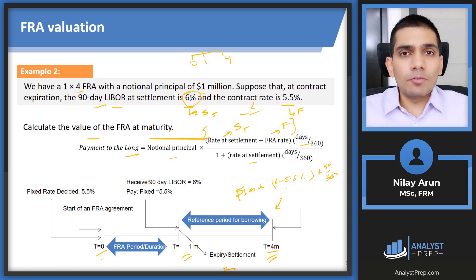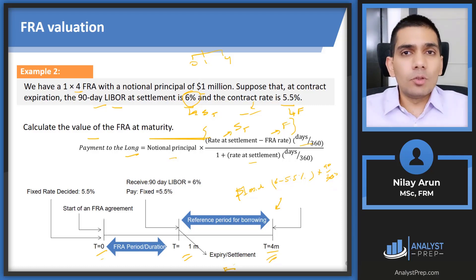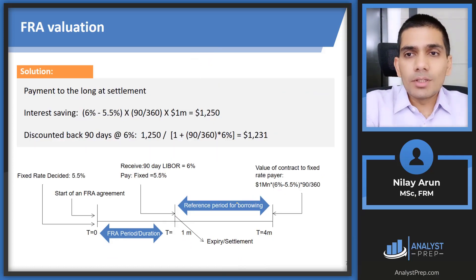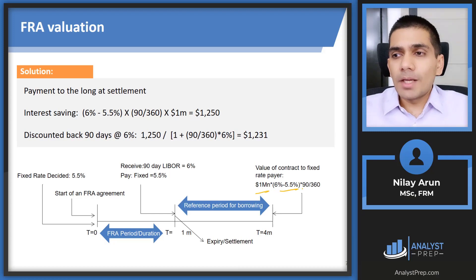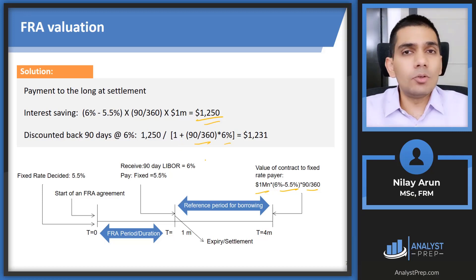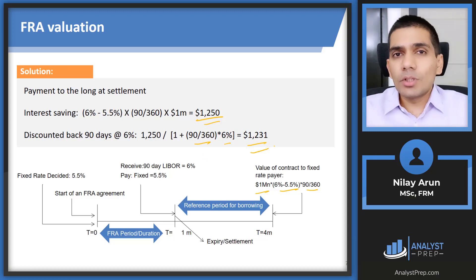Working through the solution: numerator = $1,000,000 × (6% − 5.5%) × (90/360) = $1,250. This is the payoff at t=4. Discounting back to t=1 at 6% adjusted for 90 days: $1,250 / (1 + 6% × 90/360) = approximately $1,231. So the value of the FRA at maturity to the long party is $1,231.